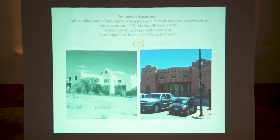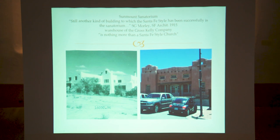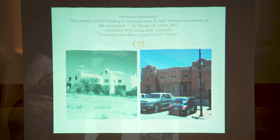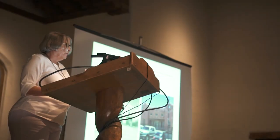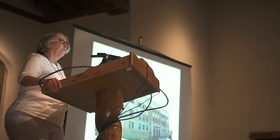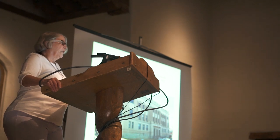There were other revival style buildings experimentally being made in Santa Fe. To quote Morley from that 1915 document, still another kind of building to which the Santa Fe style has been successful is the sanatorium. That's Sun Mount up there, and that building still exists, as well as the warehouse of the Gross Kelly Company — which Morley described as nothing more than a Santa Fe style church. These experiments were being made. Both of these buildings were designed by the firm of Isaac and William Rapp, along with their other employee, A.C. Hendrickson.